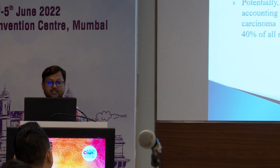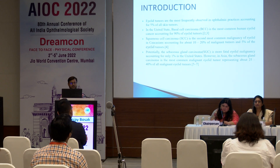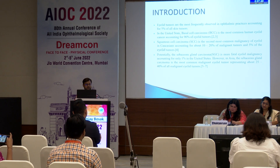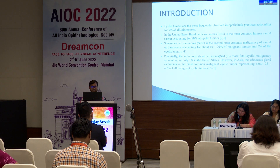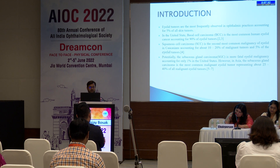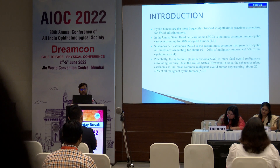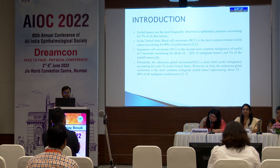Eyelid tumours are most frequently observed in ophthalmic practice, accounting for 5% of all skin cancers. In the United States, basal cell carcinoma is the most common human eyelid cancer, accounting for 90% of eyelid tumours. Squamous cell carcinoma is the second most common malignancy, accounting for 10-20% of malignant tumours and 5% of eyelid tumours.